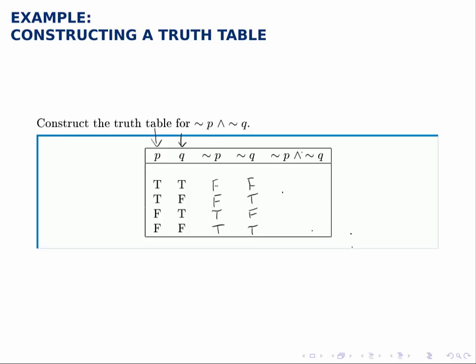Then we use the and operation to tie together these two columns, and remember the and operation is true when both of them are true and false otherwise. So one of them being false is enough to make one and the other be false. Therefore the first entry is going to be false because they're both false. The second one is also false because not P is false. The third is false because not Q in that case is false. And the last one is the only one that's true.